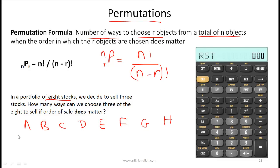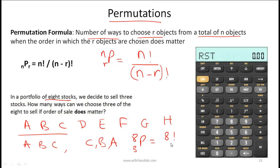For example, with 8 stocks (A through H), if we decide to sell 3 and order matters — selling A then B then C is different from C then B then A — this is written as 8P3. The formula is 8! / (8 - 3)! = 8! / 5!. On the calculator, type 8, then 2nd, nPr, then 3, and you get 336.